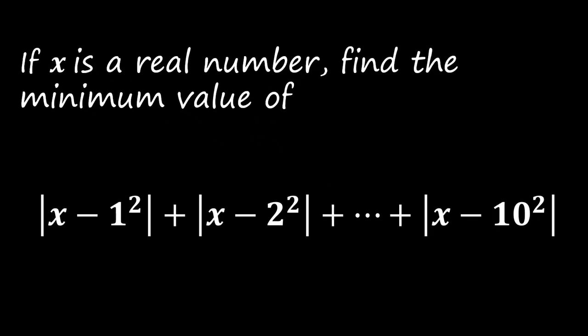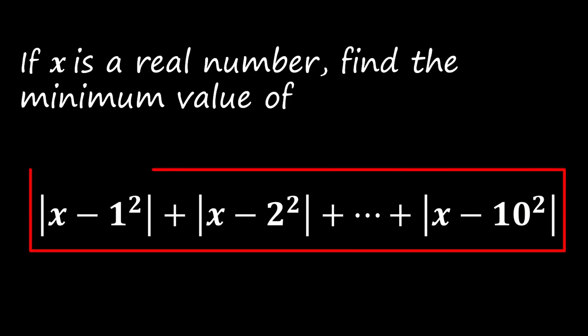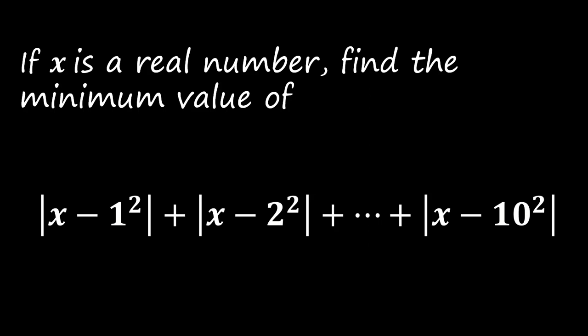For today's question, we are given that x is a real number. We are asked to find the minimum value of the following expression: absolute value of x minus 1 squared, plus absolute value of x minus 2 squared, and so on until absolute value of x minus 10 squared. Please give it a try before you look at the answer.